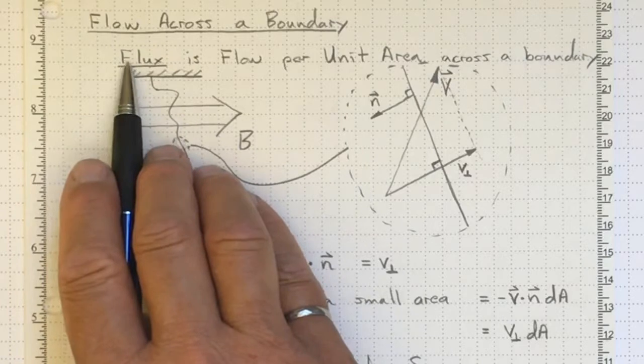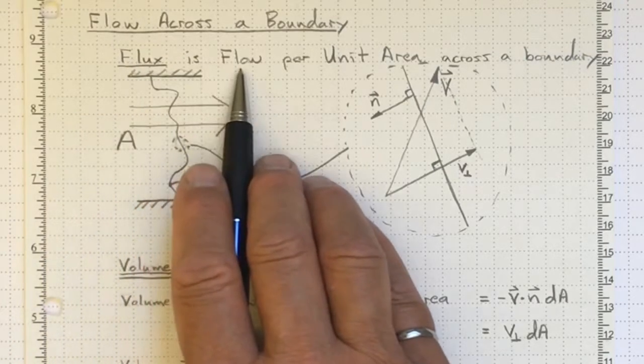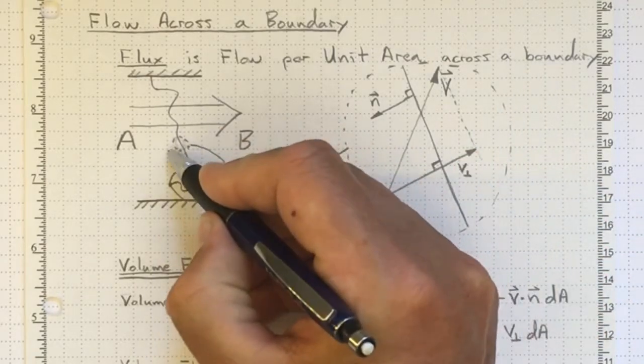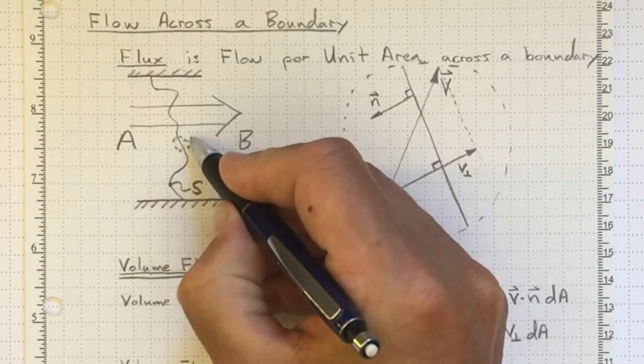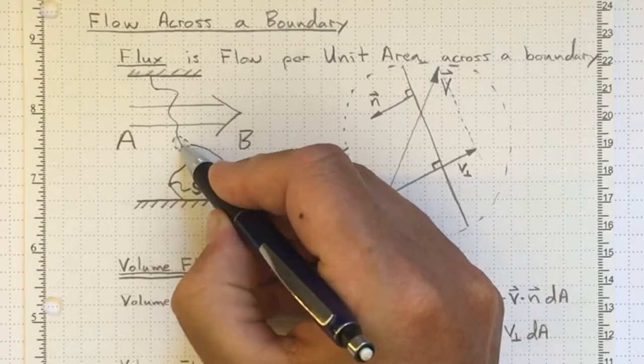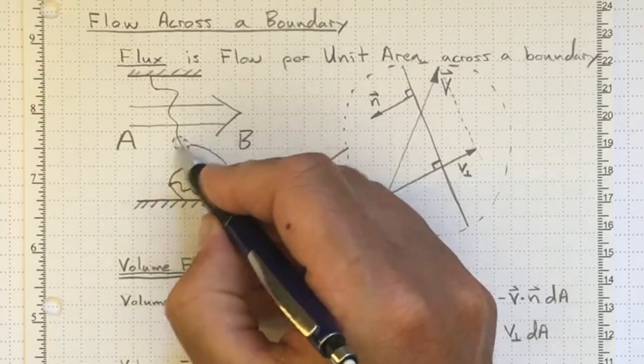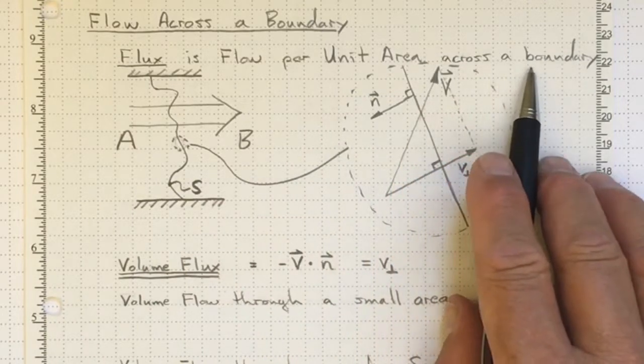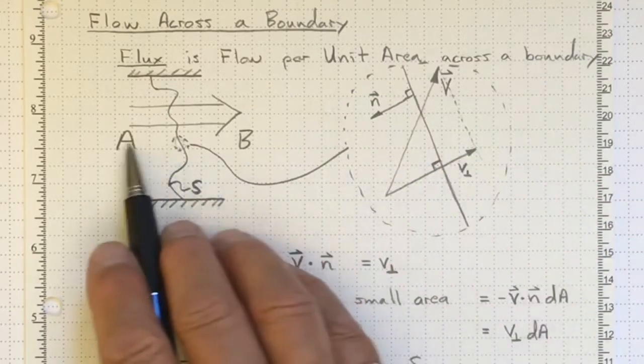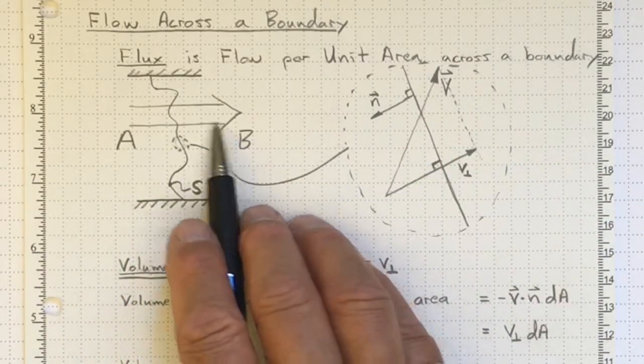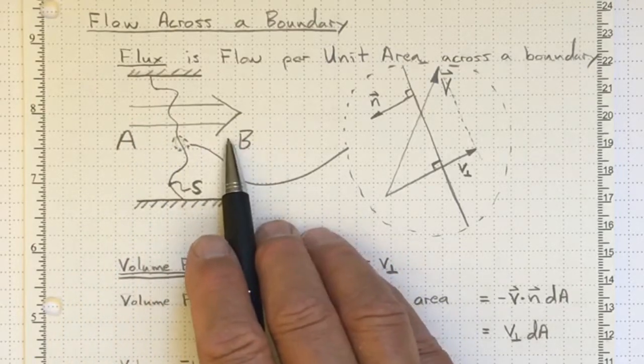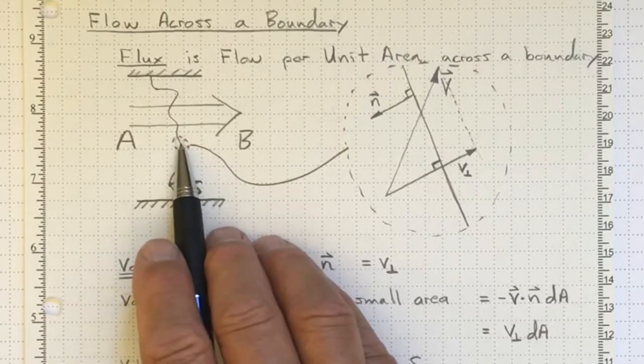A flux is defined as a flow per unit area across a boundary. So that might be the mass per square meter of this little chunk of surface that's flowing through here. So it's a flow per unit area, so it might be volume passing through a given surface area, mass passing through a given surface area, or momentum passing through that given little element of surface area.